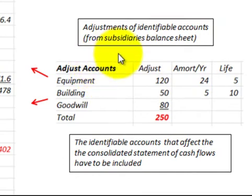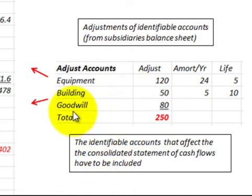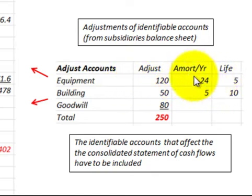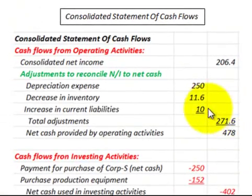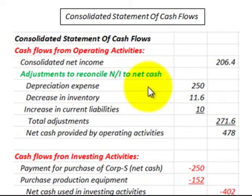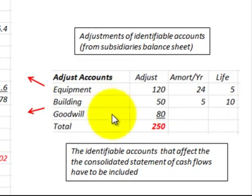Going to our adjustments accounts from the subsidiary's balance sheet, these are the accounts that have to be included in the consolidated statement of cash flows. Any identifiable accounts that affect this consolidated statement have to be included. In our example, the equipment account had amortization of $24,000 per year and the building had depreciation of $5,000 per year. These would be included as a depreciation expense, added back in the adjustments to reconcile net income. Any asset or liability accounts that affect the consolidated statement of cash flows have to be included in that statement.